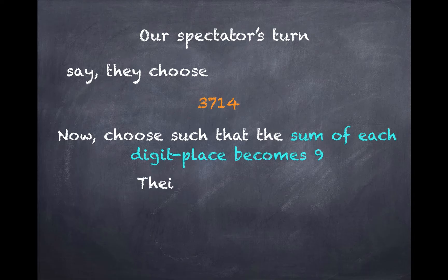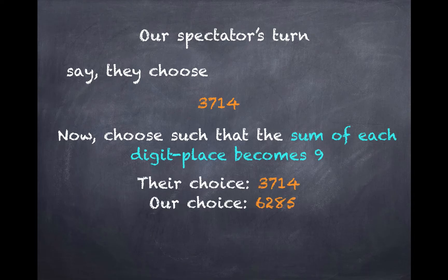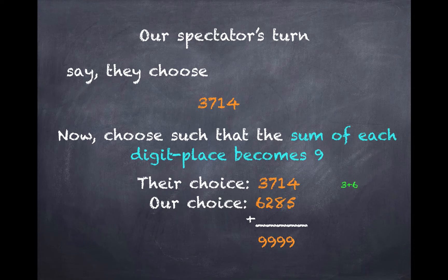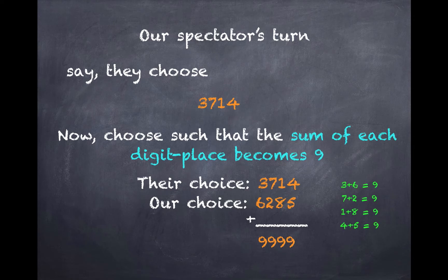So if they have 3714, we choose 6285 such that the sum of the two numbers becomes 9999. So we see that each digit place adds up to being 9: 3 plus 6, 7 plus 2, 1 plus 8, and 4 plus 5.